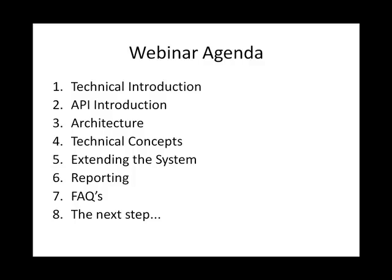First of all we're going to go through a technical introduction. We're then going to look at the API and the architecture of the Online Marketing Suite from a DB and an API perspective. We're then going to look through the technical concepts and use those concepts to extend the system. We're then going to look at the powerful reporting facilities, followed by a few FAQs, and then finally where we go from here.